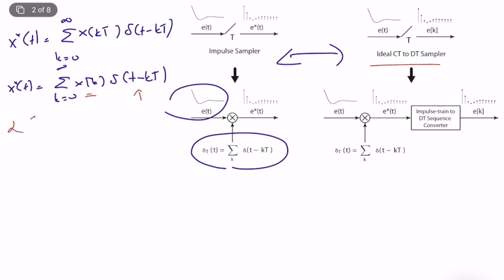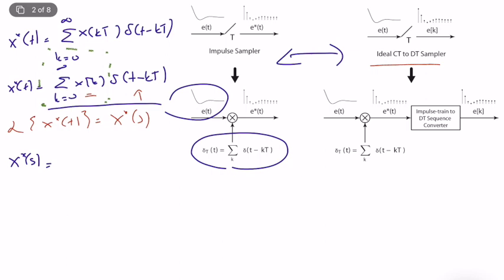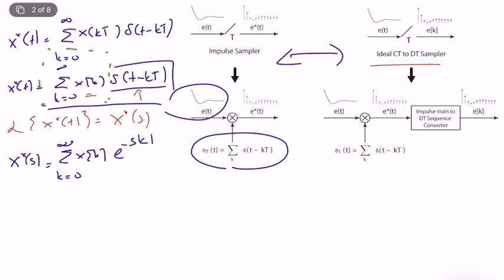Let's take the Laplace transform of this star signal and call it X*(s). X*(s) equals the Laplace transform of the expression. The part x(kT) does not depend on t, so it can be pulled out of the integral. The Laplace transform of a shifted impulse δ(t − kT) is simply e^(−skT). So X*(s) equals the sum from k equals zero to infinity of x(kT) · e^(−skT).